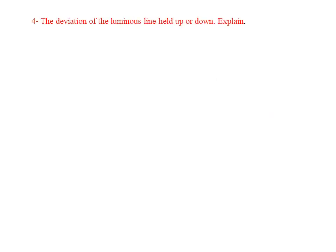Is the luminous line displaced upward or downward from the x-axis? Since the phase terminal is connected toward point A, which is toward the positive pole, the luminous line is displaced upward.